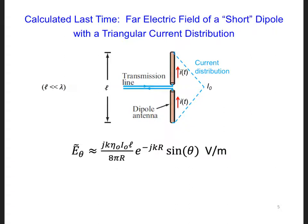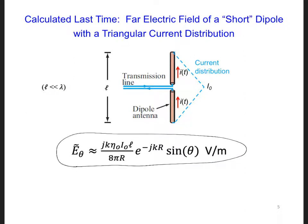Last time we calculated the electric field in the far field of this short dipole antenna with a triangular current distribution. We calculated that the electric field in the far field only has a component in the theta direction, pointing in the theta direction.